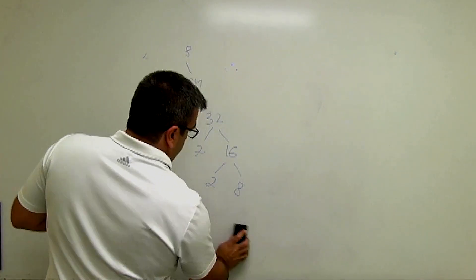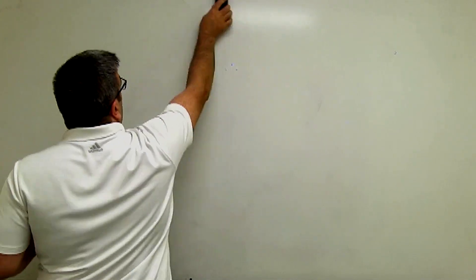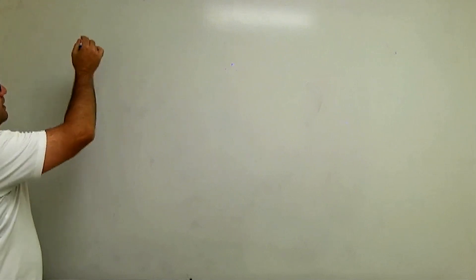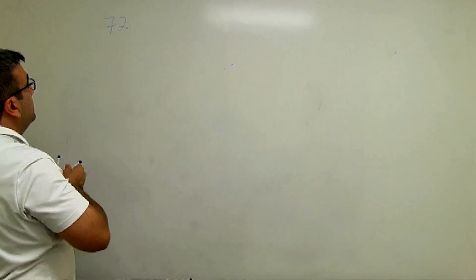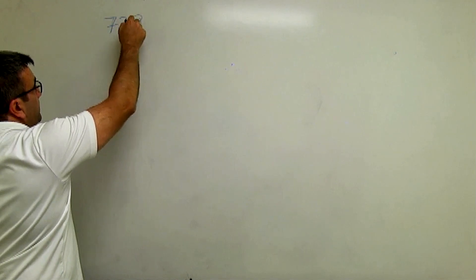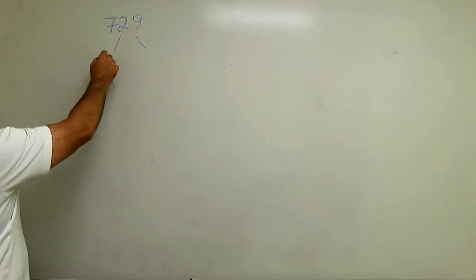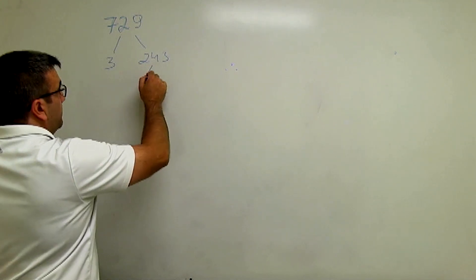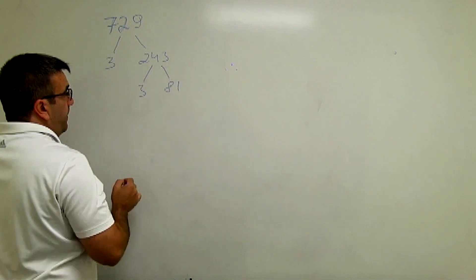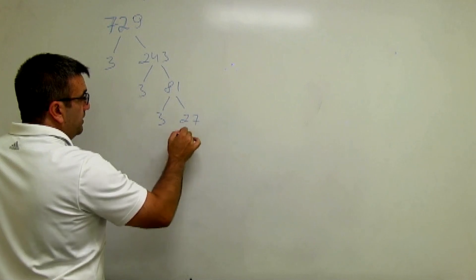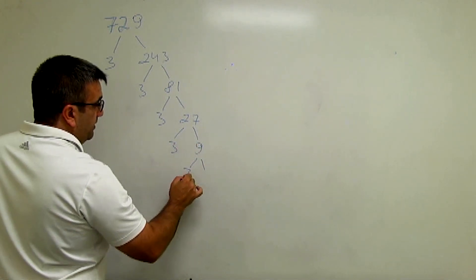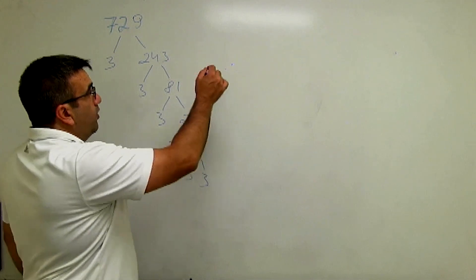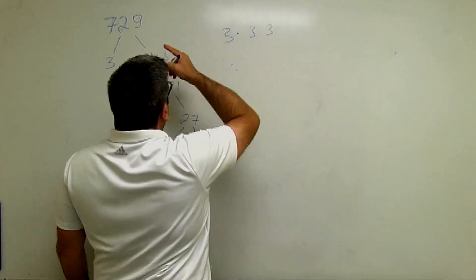Let's check the next number — 729. We can divide it by 3. Then by 3 again, so it will be 81. So 81 will be 3 and 27, 3 and 9, and 3 and 3. So we did our prime factorization. We have 1, 2, 3, 4, 5, 6 factors of 3. So if we multiply them, we get 729.